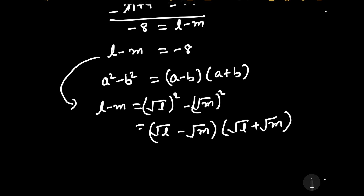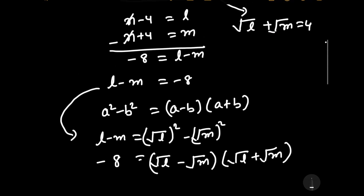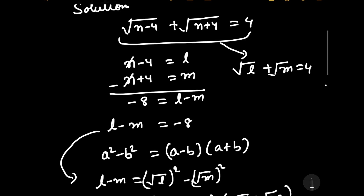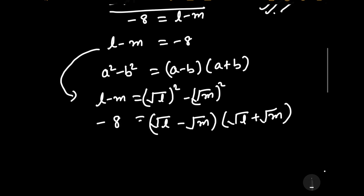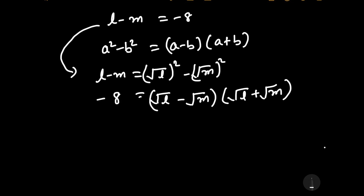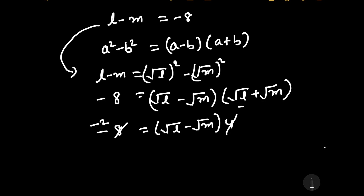The value of l minus m is equal to minus 8, so we substitute it. From the equation it is already given that square root of l plus square root of m is equal to 4. Substituting that value, 4 cancels into minus 8 giving minus 2, so square root of l minus square root of m is equal to minus 2.